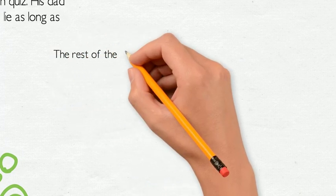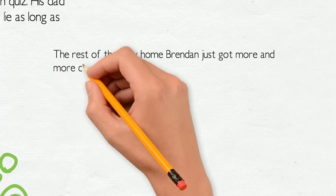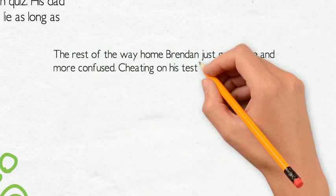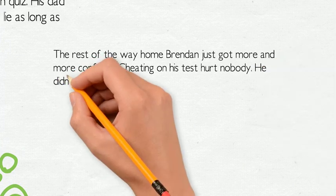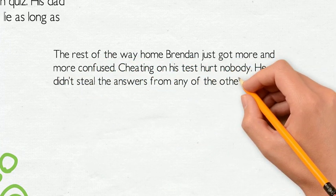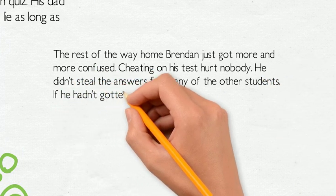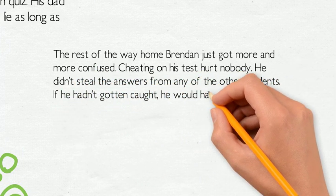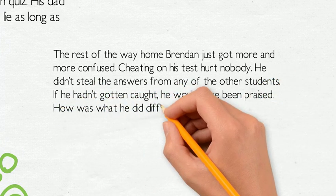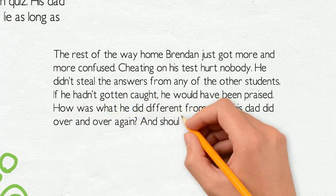The rest of the way home, Brendan just got more and more confused. Cheating on his test hurt nobody — he didn't steal the answers from any other students. If he hadn't gotten caught, he would have been praised. How was that any different from what his dad did over and over again? And should he continue to stay silent the next time his dad lied?